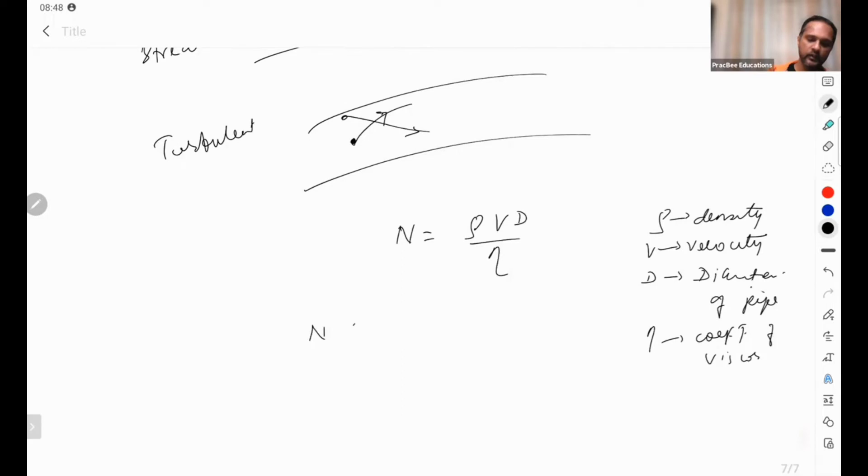This is the result: N less than 2000 to do so, steady flow ya streamline flow, okay? Steady or streamline flow. So if this number is under 3000 and 2000, then we say that it's unstable flow.